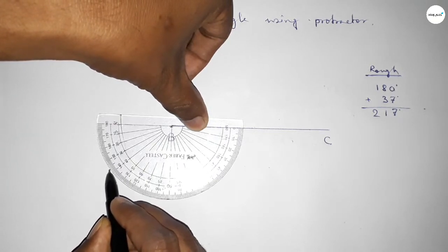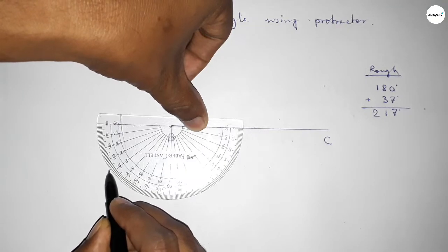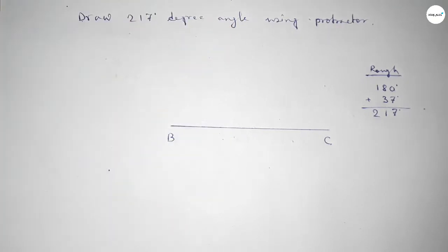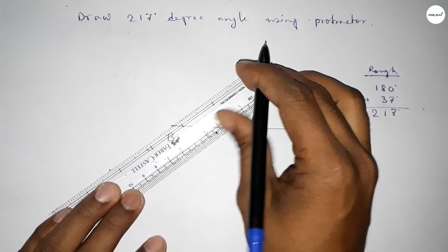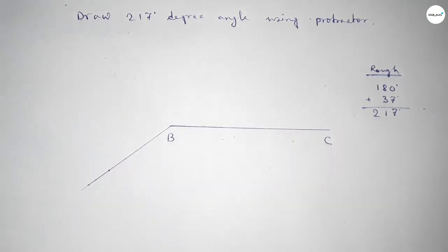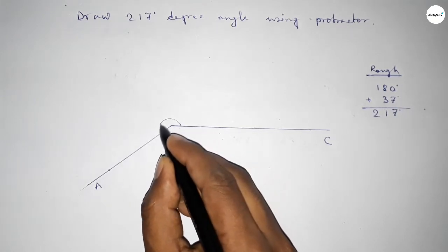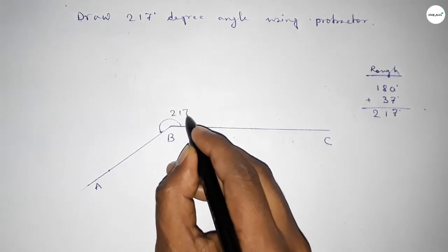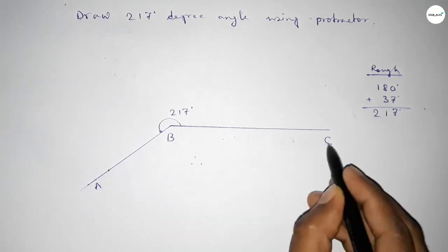So by adding 37 degree angle with 180 degree then we can get 217 degree angle. Now joining this side and taking here point A. So angle ABC up to this is 217 degree angle.